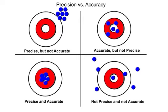The third target is both precise and accurate. All of the darts are in the center of the target and they're all grouped very closely together.